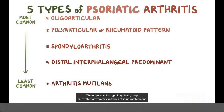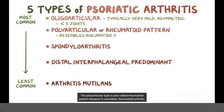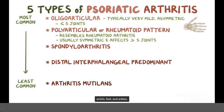The oligoarticular type is typically very mild, often asymmetric in terms of joint involvement, and usually involves fewer than five joints. The polyarticular type is also called rheumatoid pattern because it resembles rheumatoid arthritis. It's usually symmetric and affects five or more joints, including the joints of the hands, wrists, feet, and ankles.